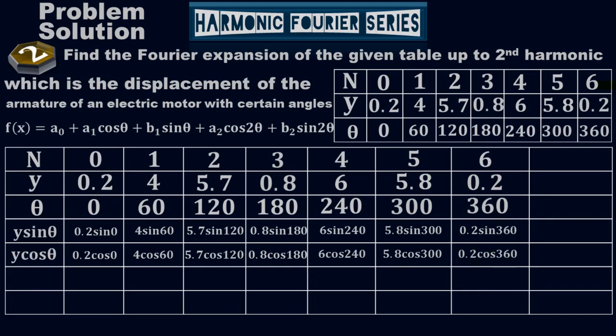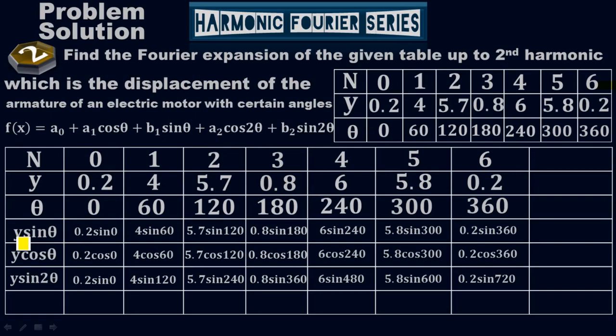So far we have done the first harmonic series. Now I'm going to do the second harmonic series, because I need to find the Fourier series up to second harmonic. Remember, y·sin(θ) and y·cos(θ) are for the first harmonic. If n = 2, I will have y·sin(2θ), which is for the second harmonic.